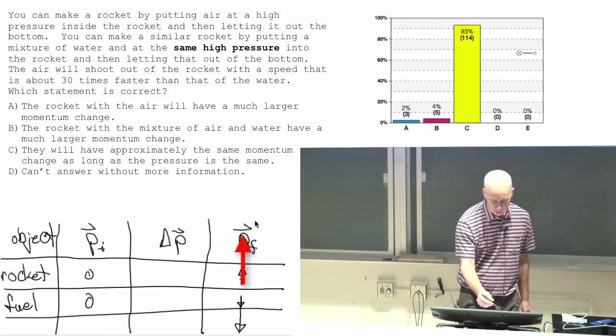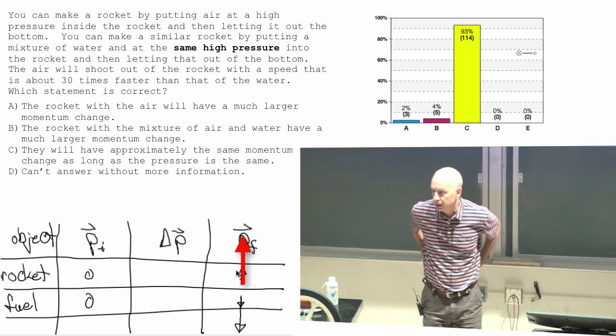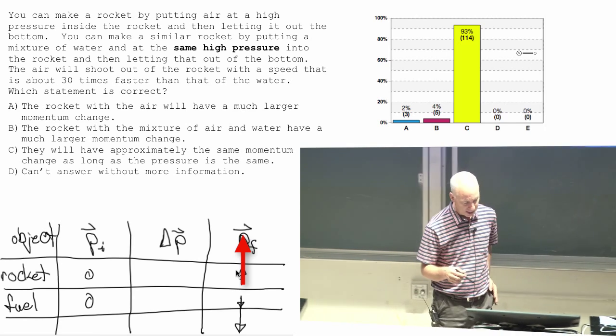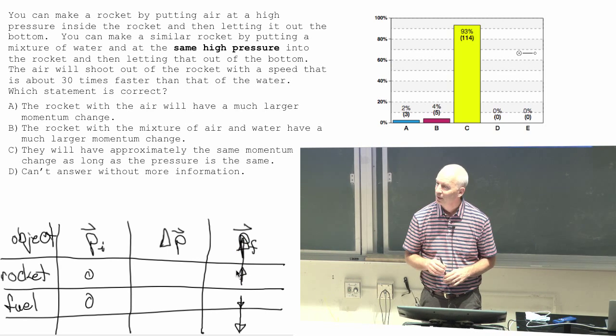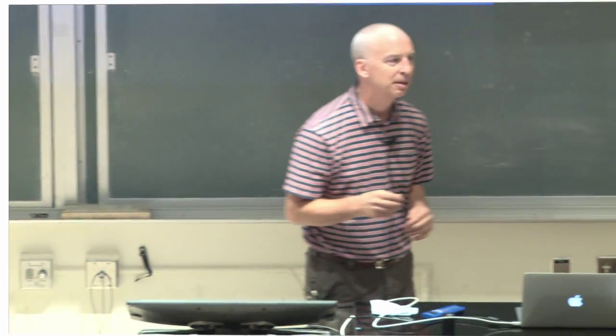So the reason the momentum of the rocket got big is because it had a big velocity all of a sudden. It was given a big velocity. It's got a high speed because the water had a high mass. Any other question?